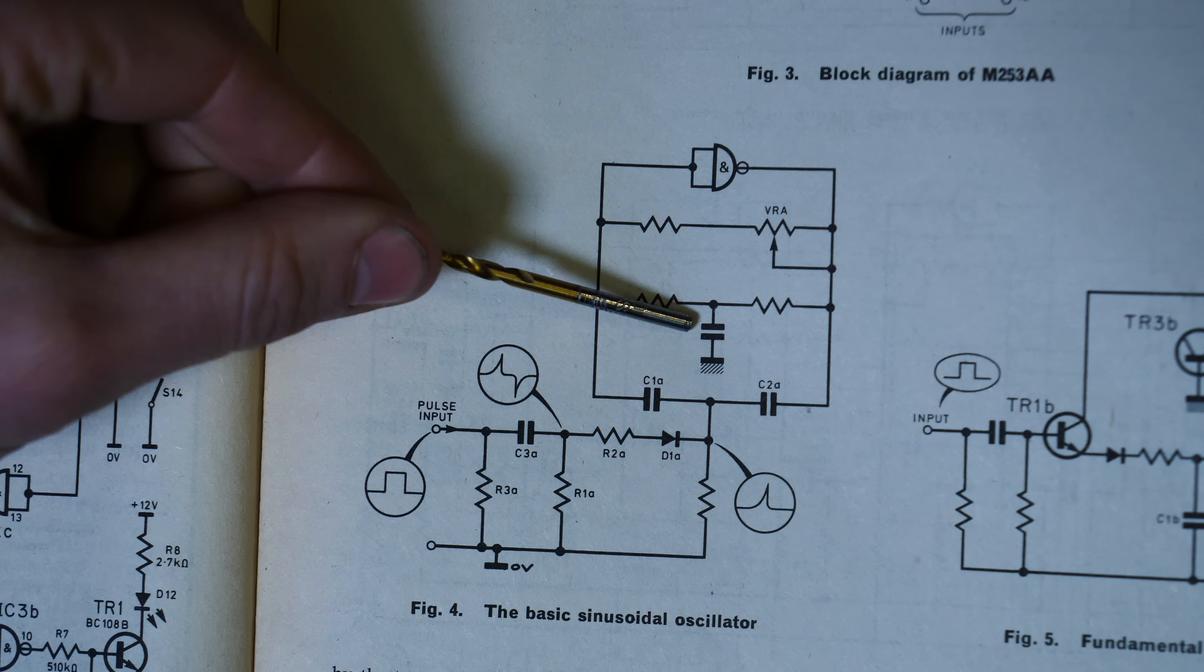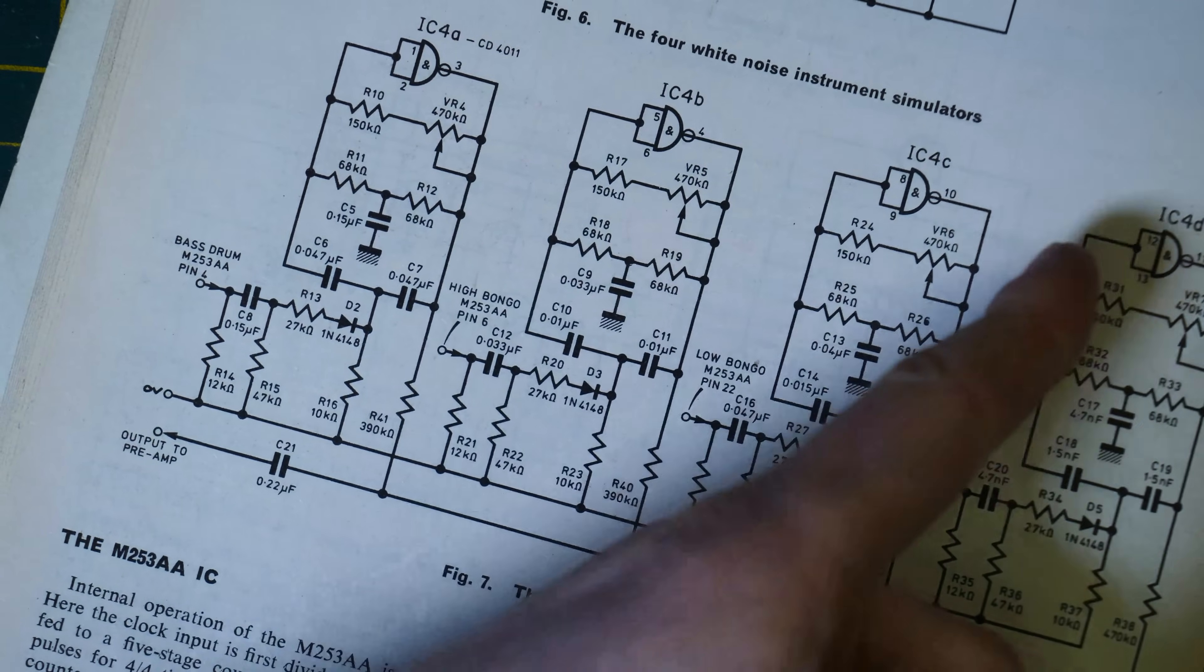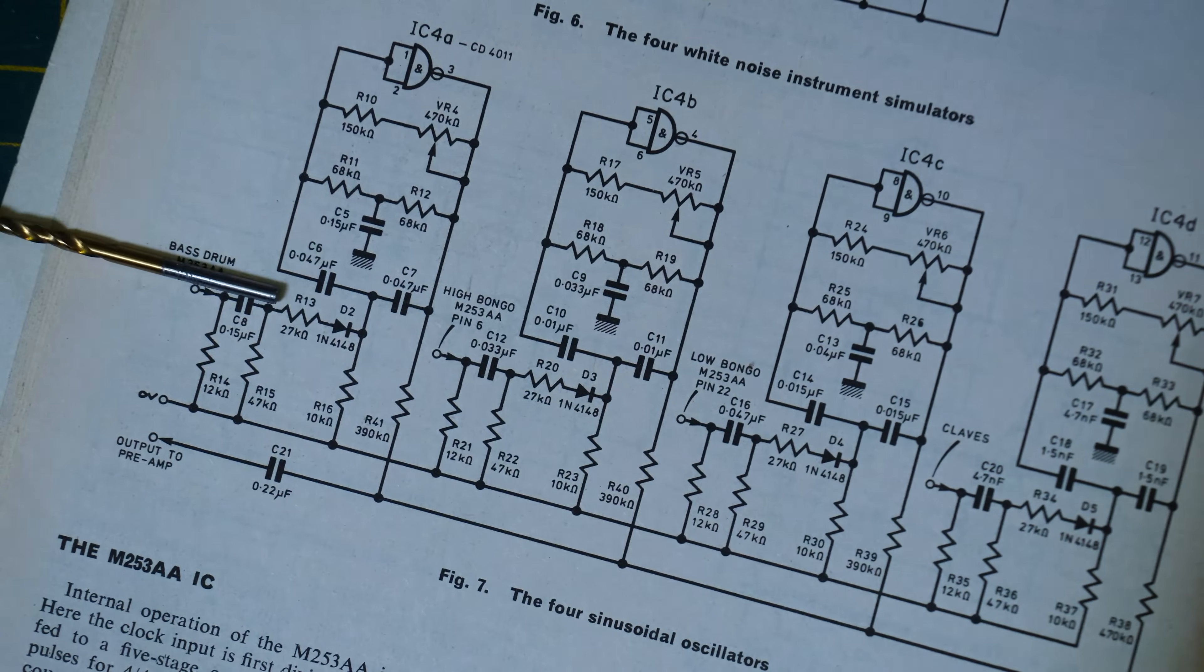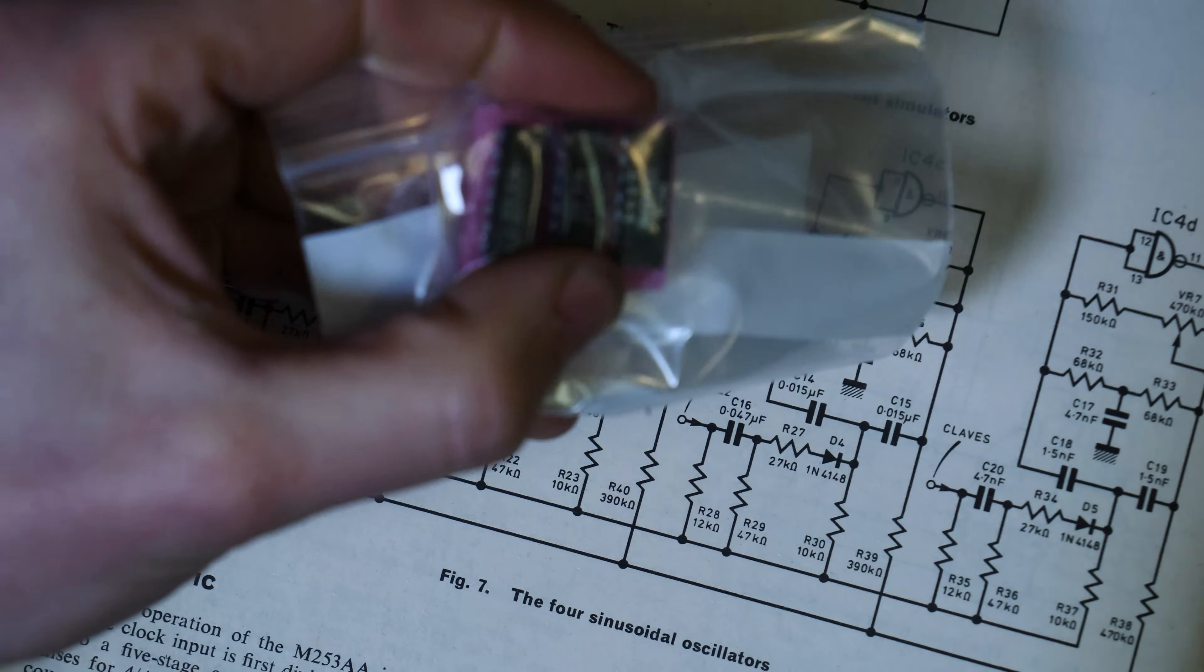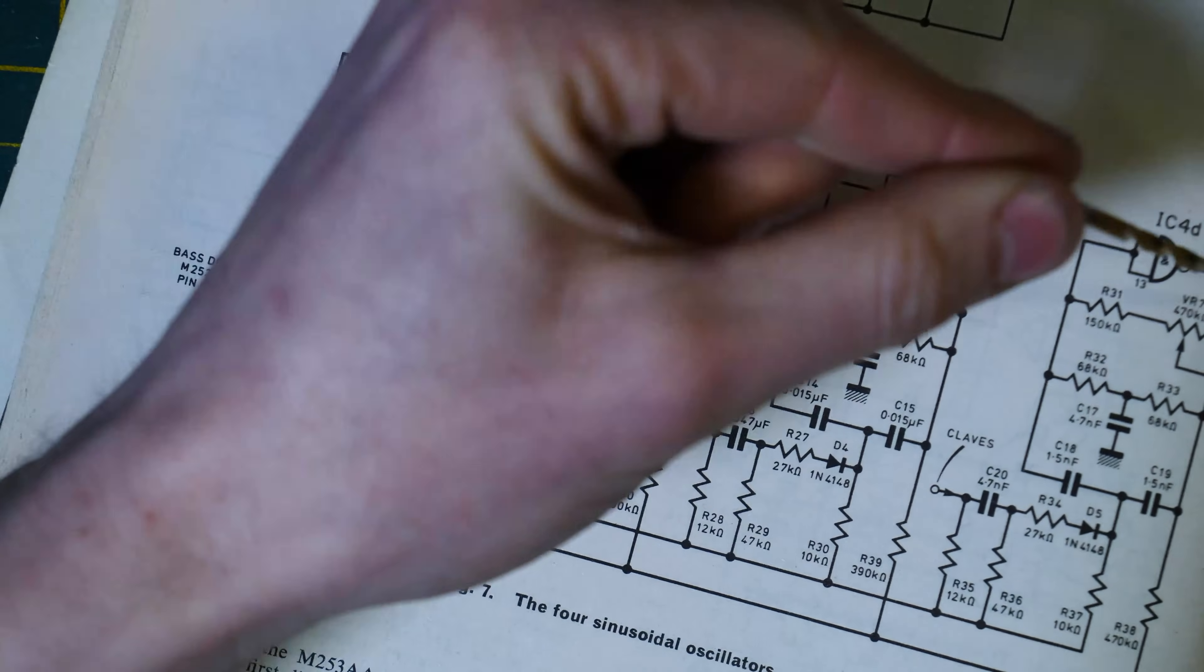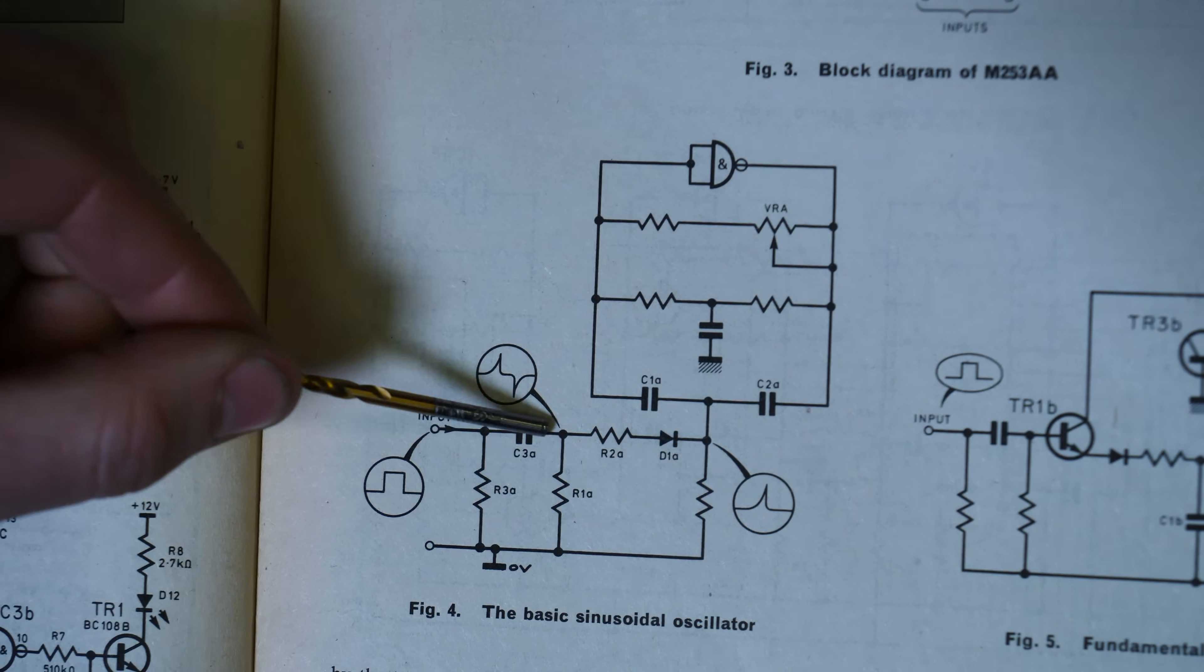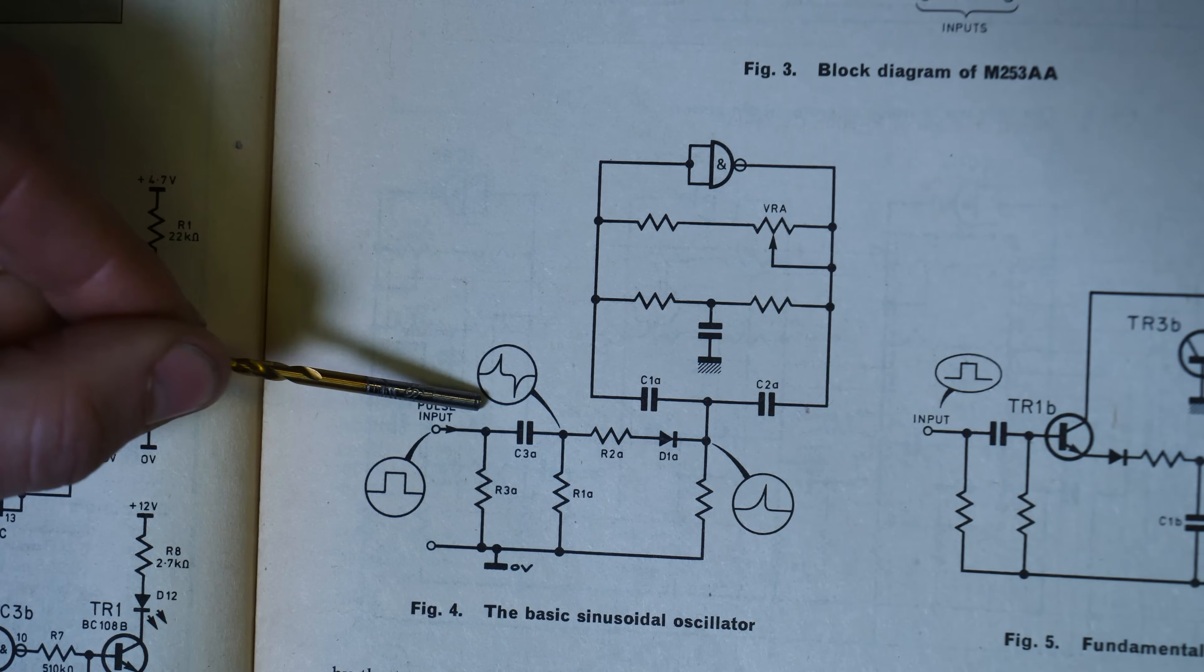All four oscillators in this group are identical with the exception of the values of the timing capacitors, which set the frequency of the oscillation. Figure seven, which is the whole circuit of this, because you'll notice that there are actually four circuits. And this is actually governed by the fact that it's using a 4011 chip, which is basically a quad NAND gate. So I guess that's why they chose four voices, because they've got four NAND gates in these packages. The values of the capacitors are chosen to suit the instrument being simulated.